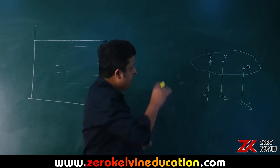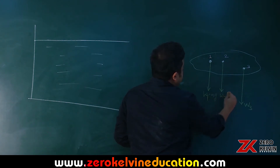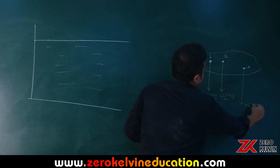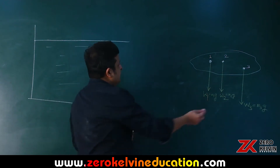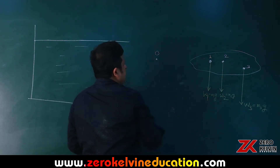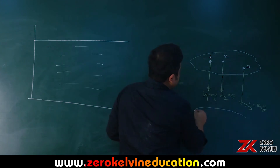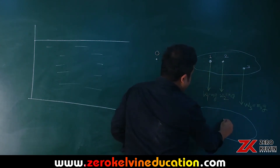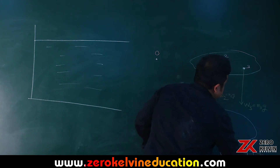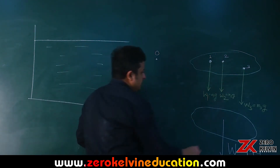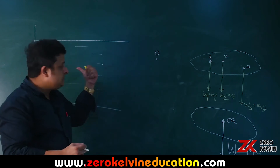Suppose the body is in a uniform gravitational field. Then W1 = m1·g, W2 = m2·g, W3 = m3·g. To find the line of action of this force, consider any reference point O and calculate the torque. We replace the whole distributed weight system by the total weight W = total mass × g acting at a single point. That is how we define the center of gravity, CG.